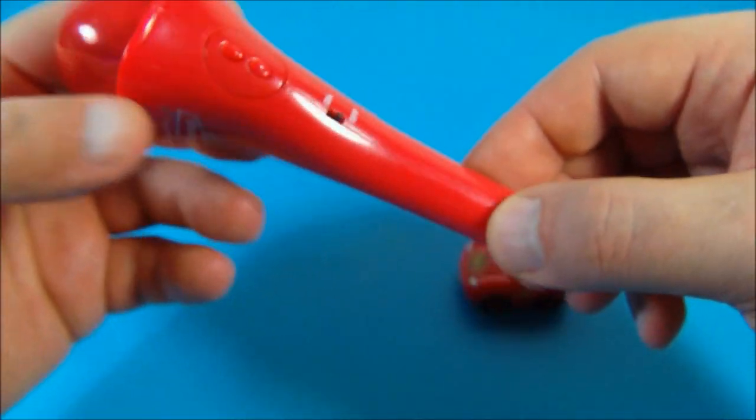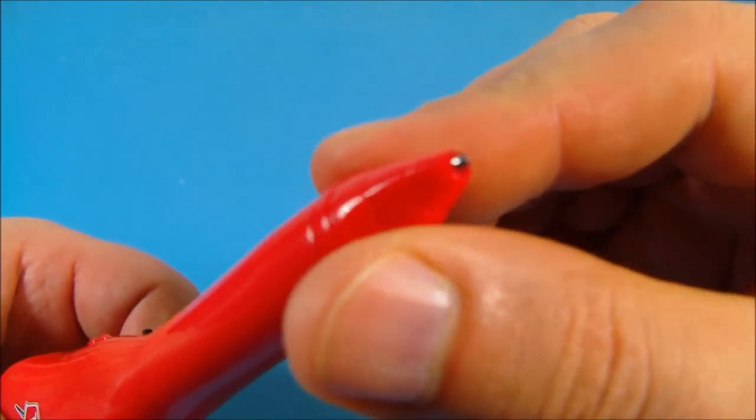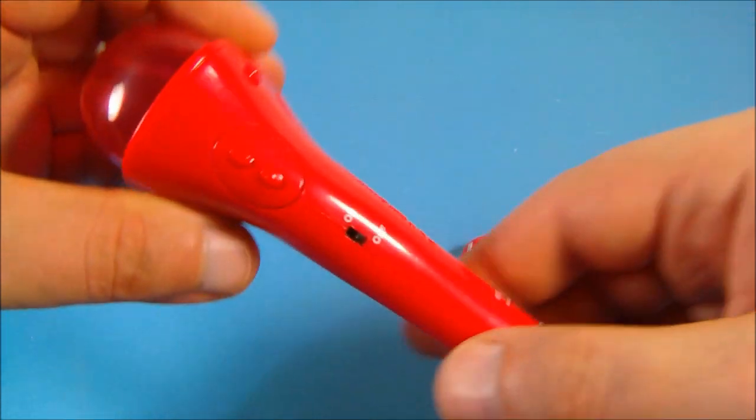So here is the remote control device slash pen. So down here is the pen part. You just spin that and it reveals the tip of the pen and comes right out there. Nothing too complicated there.